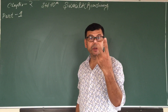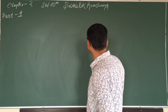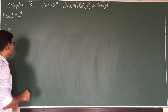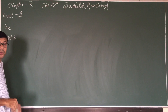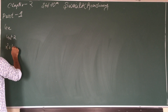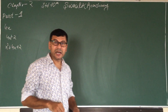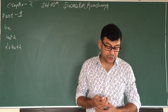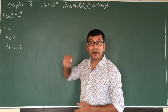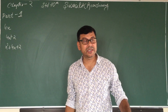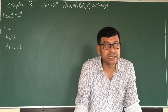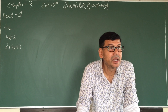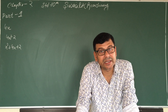Monomial — mono means 1; binomial means 2; trinomial means 3. Now, each polynomial has some power — one, two, three, four, five, and so on. Any polynomial having power one is considered a linear polynomial. Any polynomial having power two is considered a quadratic polynomial. Any polynomial having power three is considered a cubic polynomial.